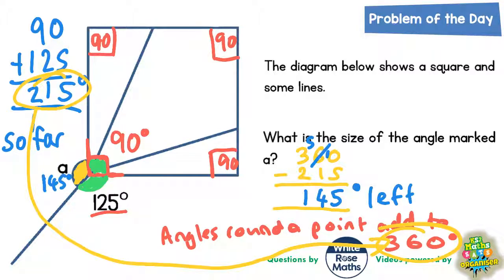Whenever you get a missing angle and you work out what it is, always go back to the diagram and write it on like I have there, 145 degrees.